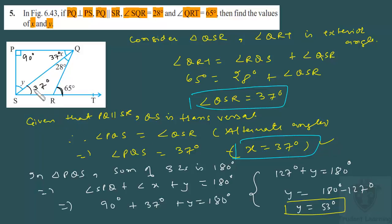So y equals 53 degrees and x equals 37 degrees. You can verify: 53 plus 37 equals 90. That was an easy question. Let us move on to the last question of the exercise.